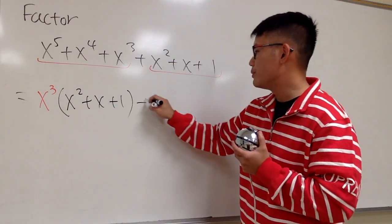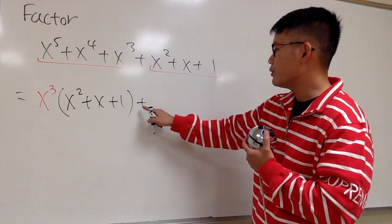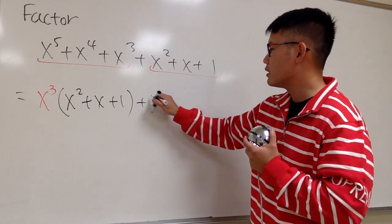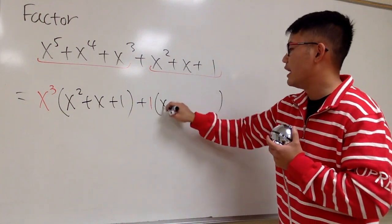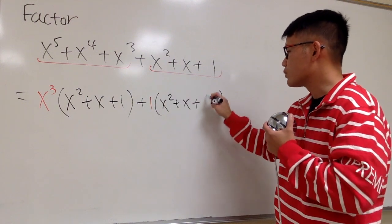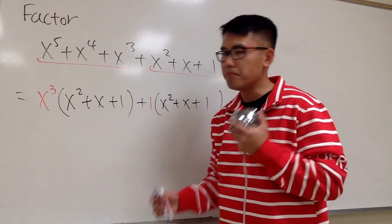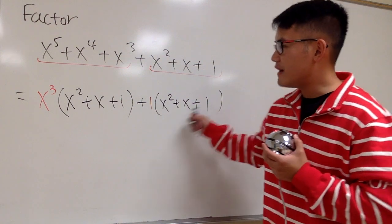And then for this, they happen to be just this. And then I'm going to technically factor out plus one, and then parentheses around this: x squared plus x plus one. This and that match. Factor them out.